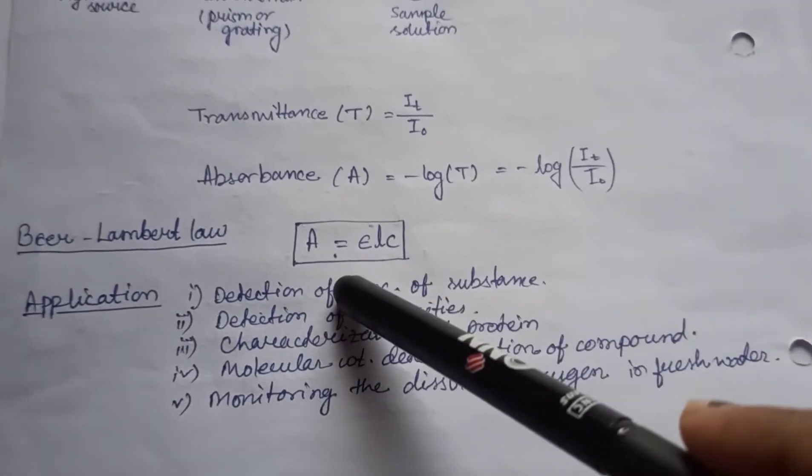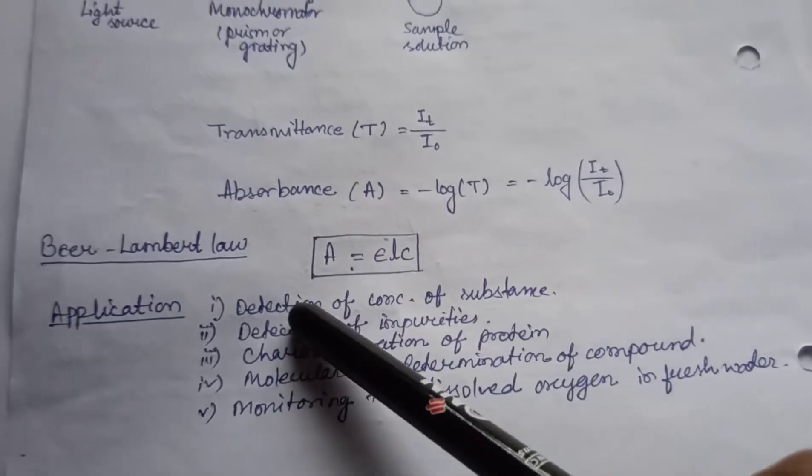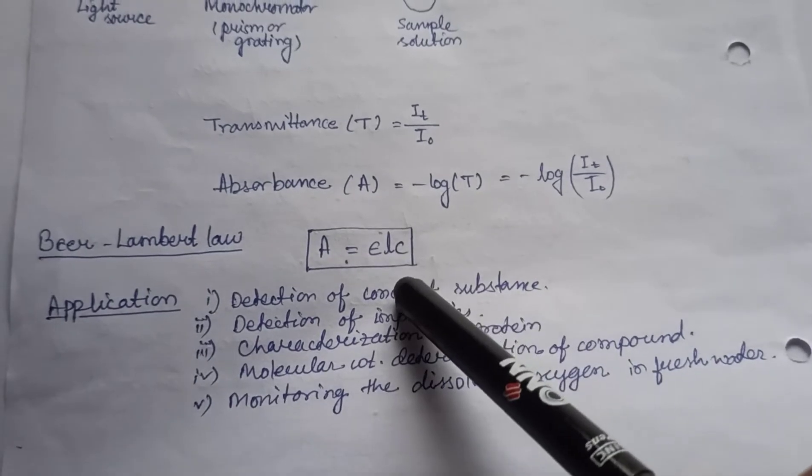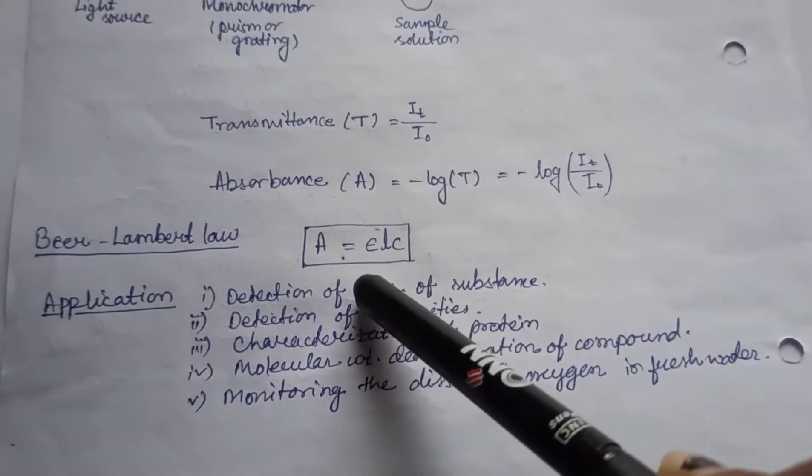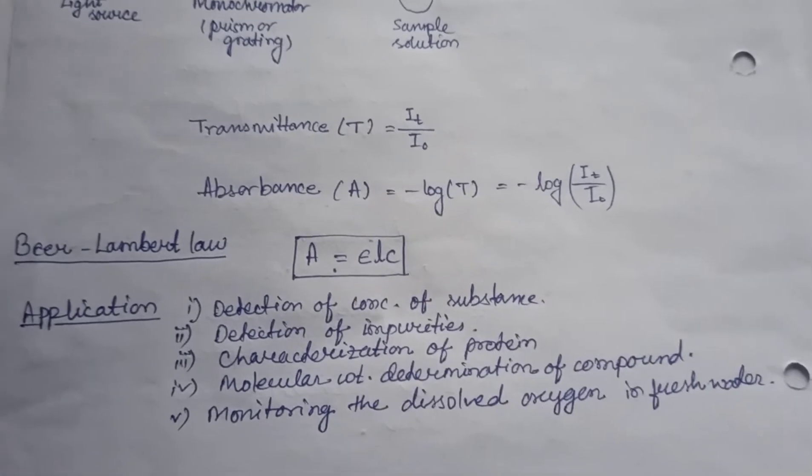The Beer-Lambert law is A equals epsilon lc, where A is the absorbance which has no unit. Epsilon is the molar extinction coefficient, l is the path length, and c is the concentration.